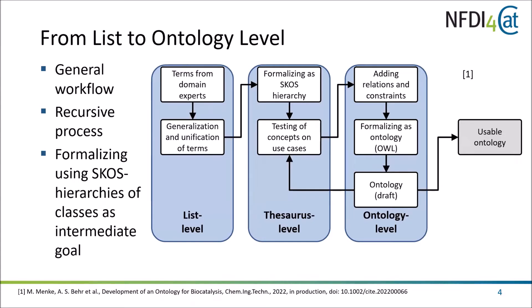Our general workflow is kind of recursive. First we gather terms from domain experts and try to generalize and unify them — all at the list level, so basically Excel files. Then formalization takes place as a SKOS hierarchy, where within those Excel files we use SKOS narrower and SKOS broader to sort terms and retrieve hierarchy files with a shared common vocabulary. Afterwards we describe our use cases with concepts gathered in the SKOS files. Then the ontology level follows, where we add relations and constraints, formalize concepts into classes, and obtain ontologies which we recursively test on our use cases.